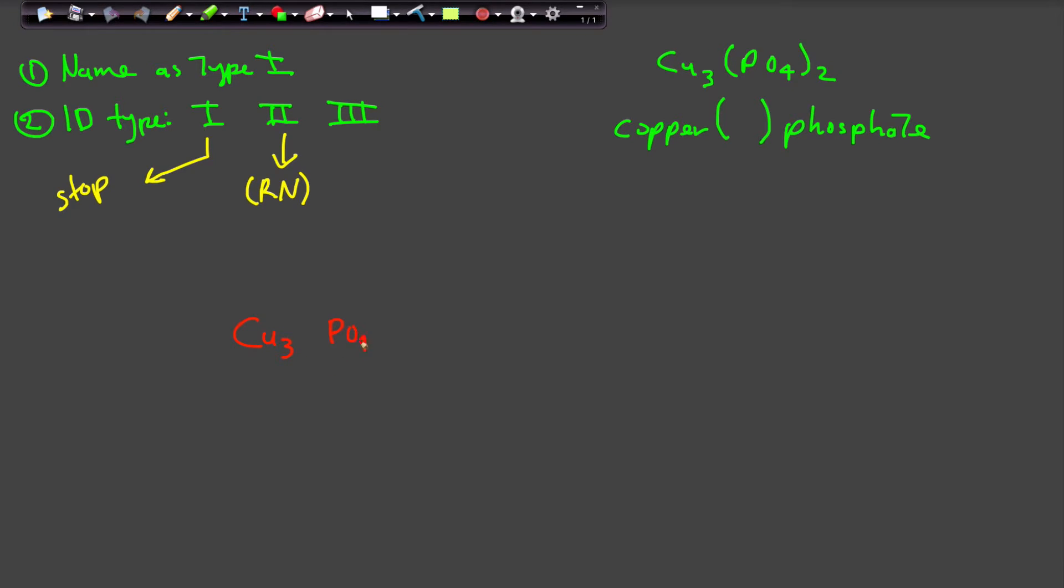So let's kind of go over that again. So we've determined that our formula is Cu3(PO4)2. The prize here, what you're trying to accomplish, is to figure out this number that goes with copper—that is the oxidation number, that is the charge.